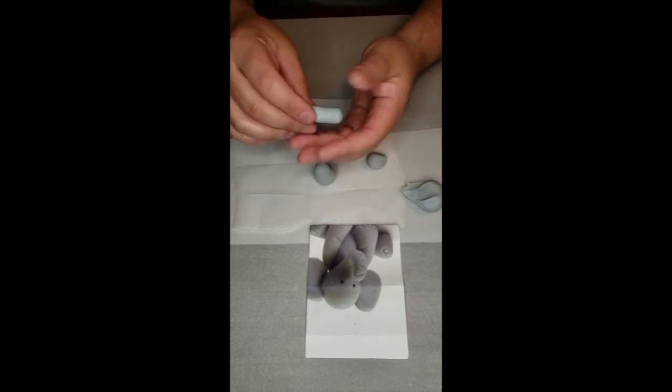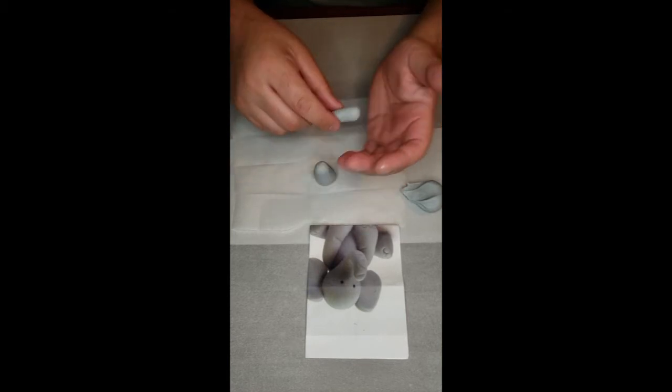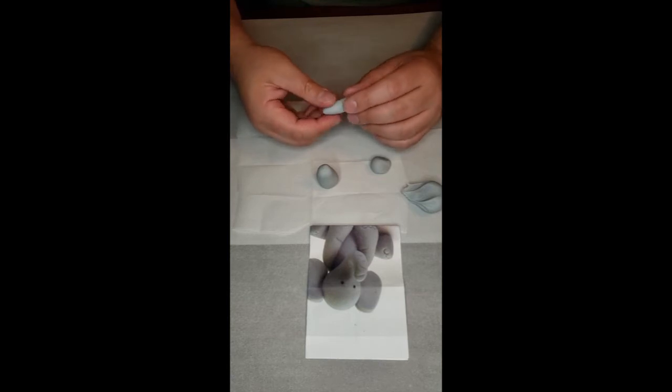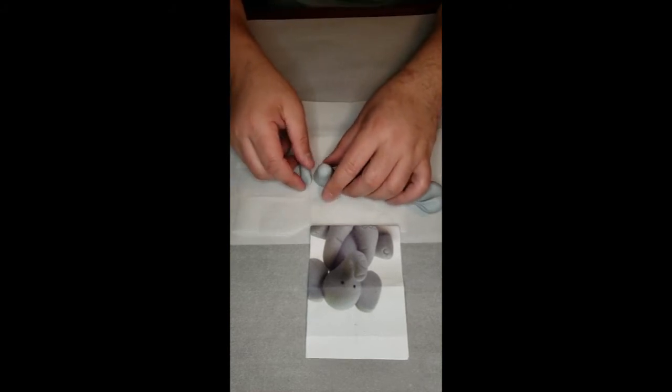Now one end will be slightly thicker than the other end. So this will be the part of the foot. Now you notice that the fondant is going to stick into my fingers. To avoid that, you can use powdered sugar or you can use cornstarch as long as your parents permit it.